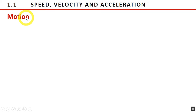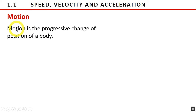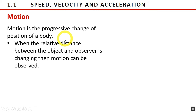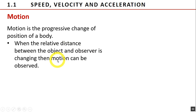This first unit deals with motion. Motion is the progressive change of position of a body. Each object in the universe moves relatively with one another. A body which is moving to one observer may be at rest as seen by another observer. When the relative distance between the object and observer is changing, then motion can be observed. The two objects are at rest, or no motion, when there is no relative change in distance between them.